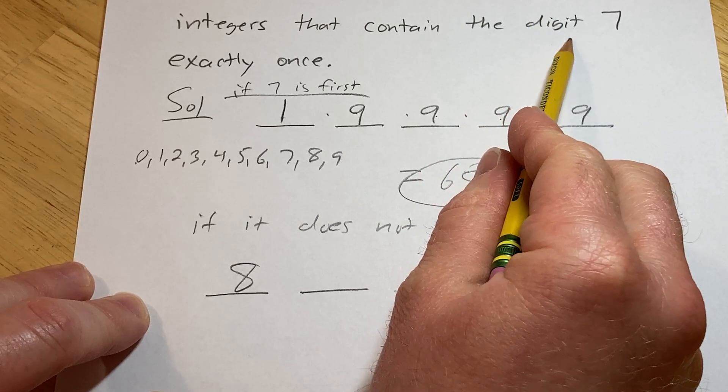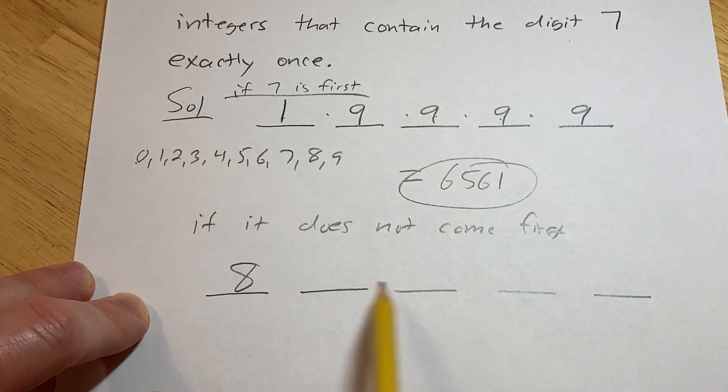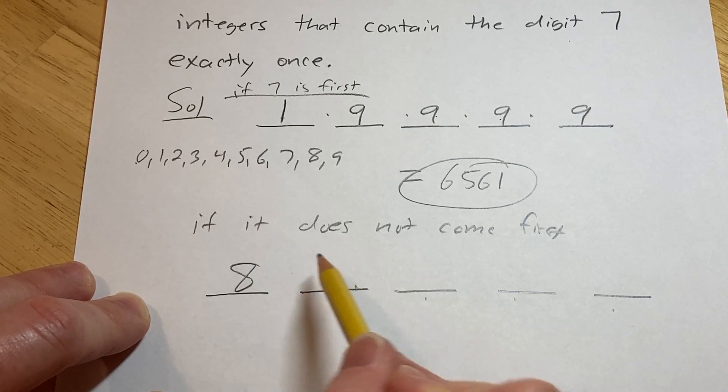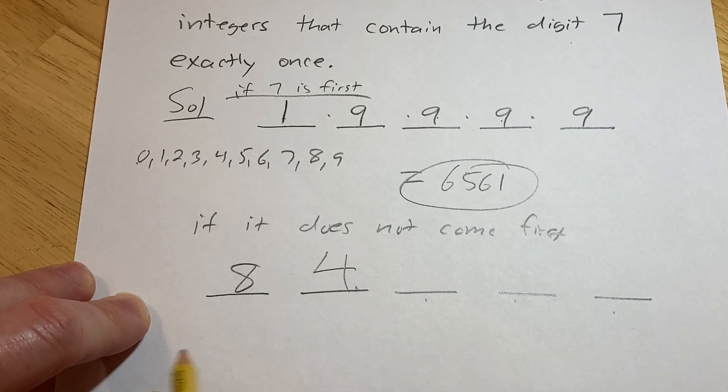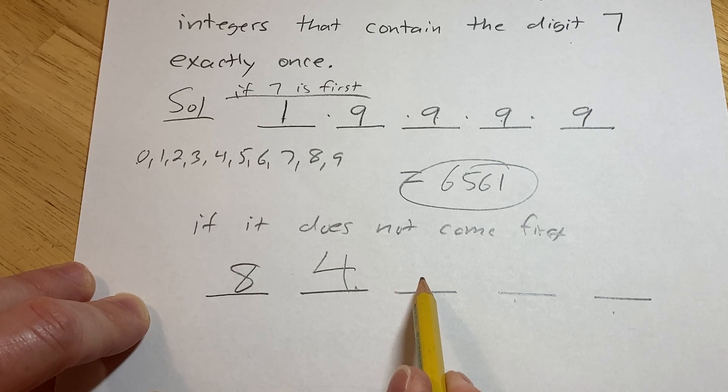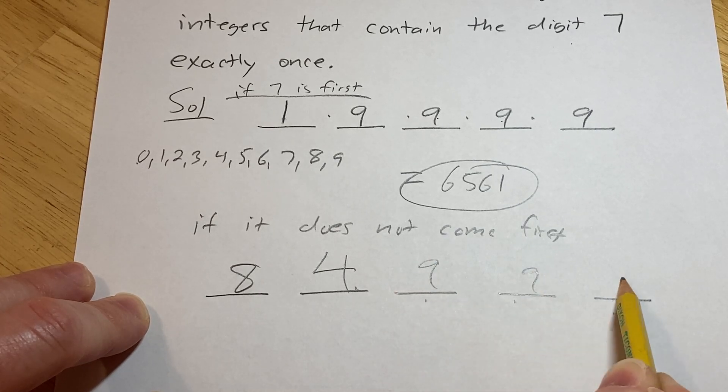And now we want the 7 to appear exactly once. So there's one, two, three, four ways to do that. So let's just say it appears here. So we have four choices. And then we have nine choices for the remaining digits.